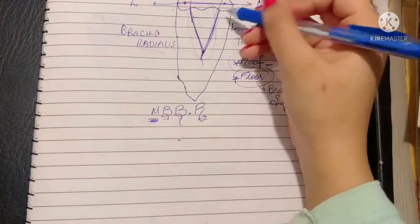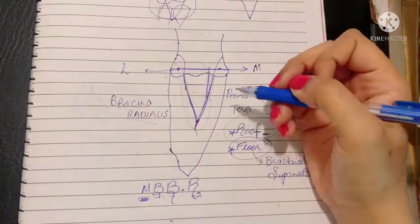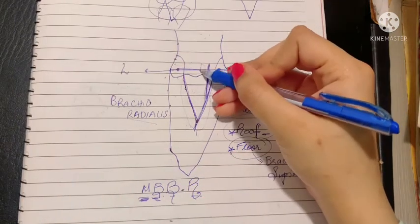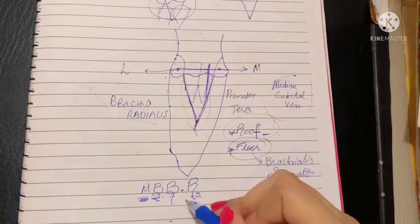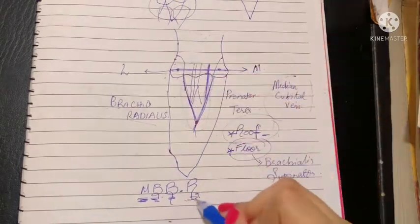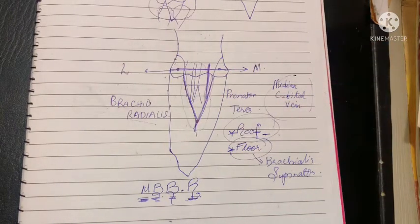The contents of the cubital fossa from medial to lateral: M stands for the median nerve, a nerve of the anterior compartment. B for the brachial artery, B for the tendon of biceps, and finally R for the radial nerve. These are the contents of the cubital fossa.